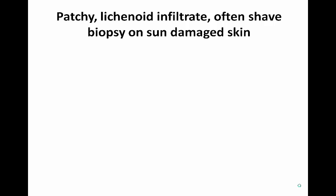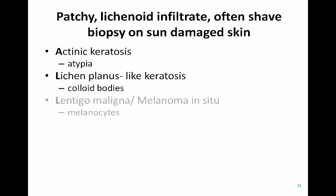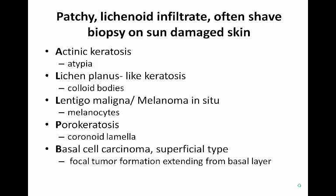We call this the 'all peanut butter' differential, because each letter stands for one of the differential diagnoses for patchy lichenoid inflammation on sun damaged skin. The A stands for actinic keratosis, and L for lichen planosite keratosis — also called lichenoid keratosis or benign lichenoid keratosis. The next L for lentigo maligna or melanoma in situ. The P for porokeratosis, and the B for basal cell carcinoma, specifically the superficial type.